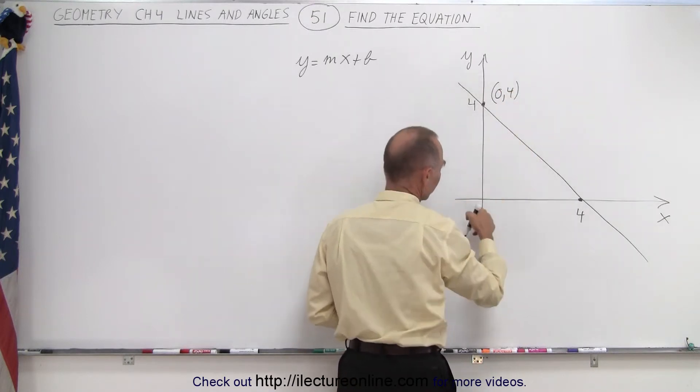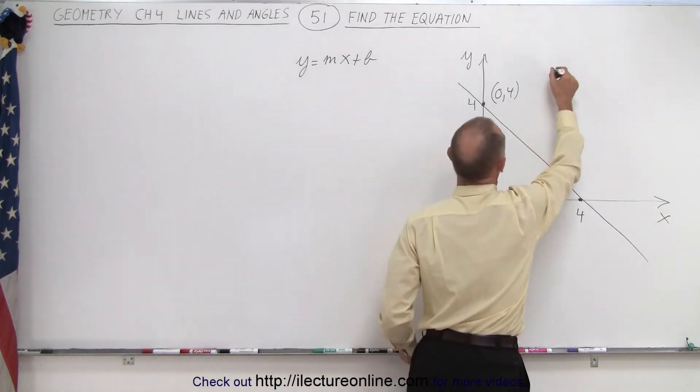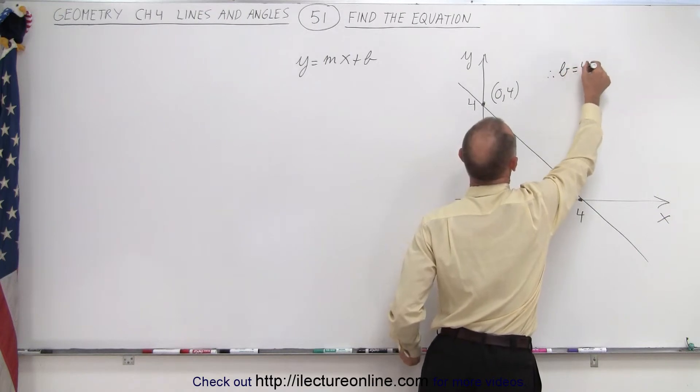The x-coordinate of that point is 0. The y-coordinate of the point is 4. So therefore we can see that b equals 4.